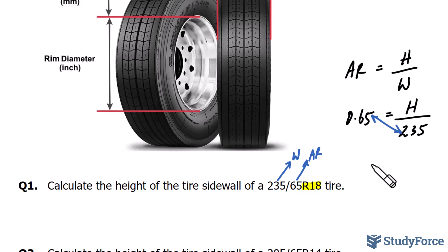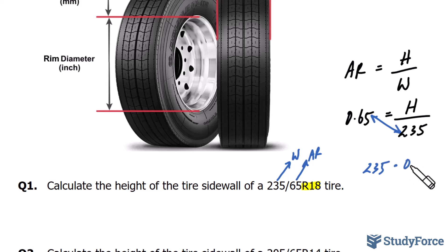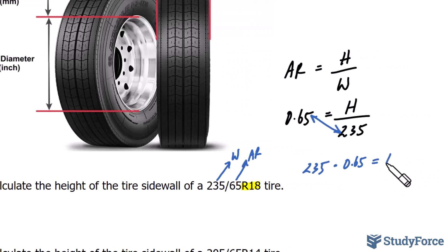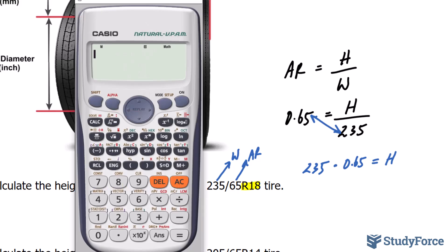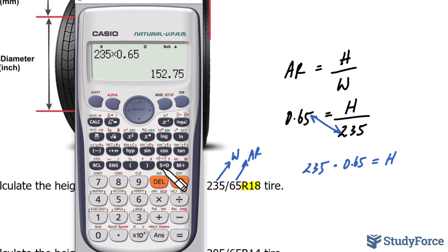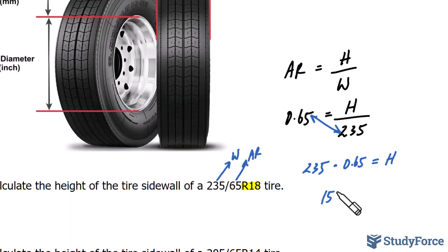So if I take 235 and multiply it by 0.65, I'll end up getting the tire height in millimeters. Using our calculator, 235 times 0.65, we end up getting a height of 152.75 millimeters.